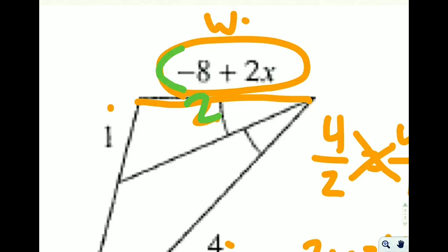We also know that this side, because the problem told us so, is negative 8 plus 2x. So now we can just take that negative 8 plus 2x and set it equal to what we know the answer is, which is 2.